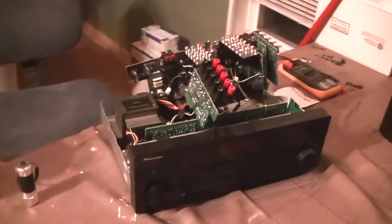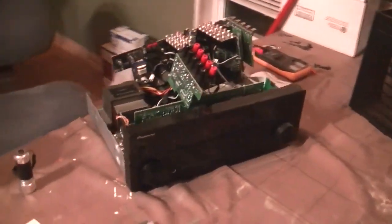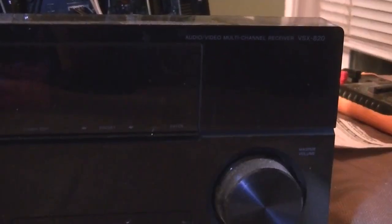Now this receiver I got off eBay about two or three months ago for about $10. This is a Pioneer model VSX-820. It has USB inputs, Bluetooth, all kinds of fun stuff that I want to play with.